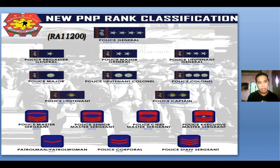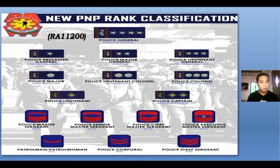For non-commissioned officers, you can identify them through stripes on the sleeves of the uniform. For a Patrolman or Patrolwoman, you can find one stripe. For Police Corporal, two stripes. The more stripes present on the sleeves, the higher the rank. The number of stripes increases as the police officer is promoted from one rank to the other.